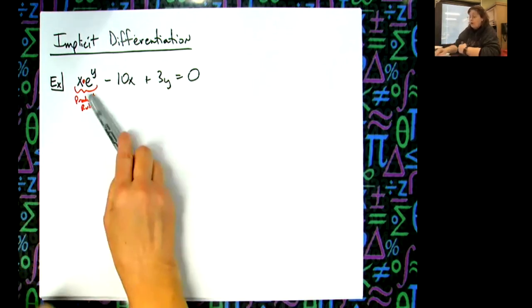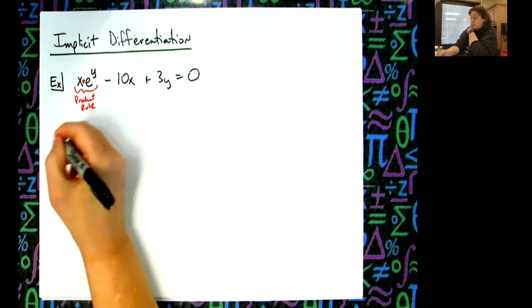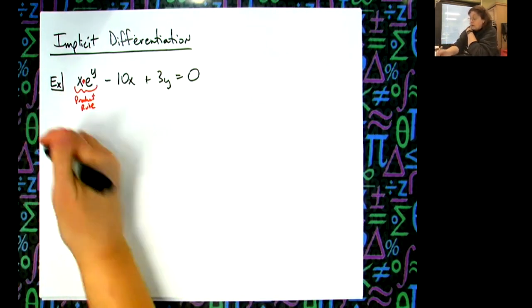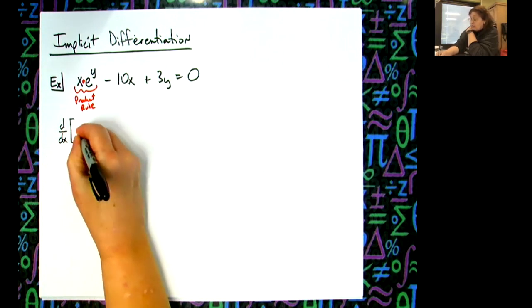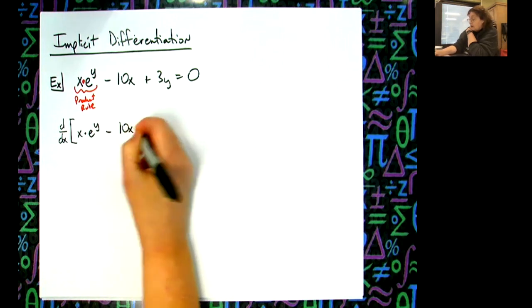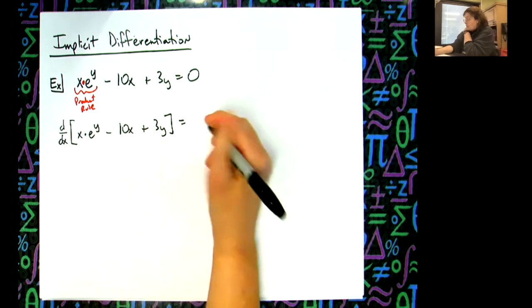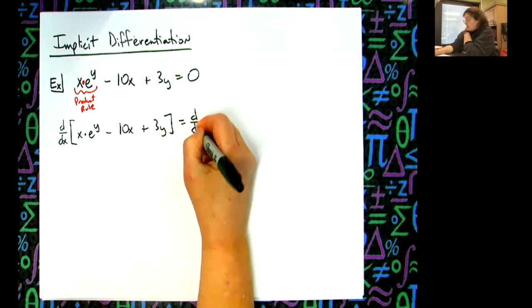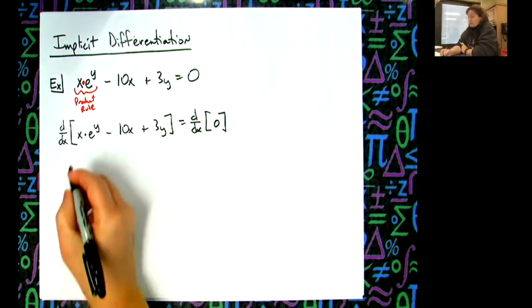This is going to be straight derivative, this will be a straight derivative. So product rule right here. I'm not going to use the d/dx notation, well I'll use it out in front, not inside here. So we're taking the derivative of x e to the y minus 10x plus 3y. This is telling people we're taking the derivative with respect to x.